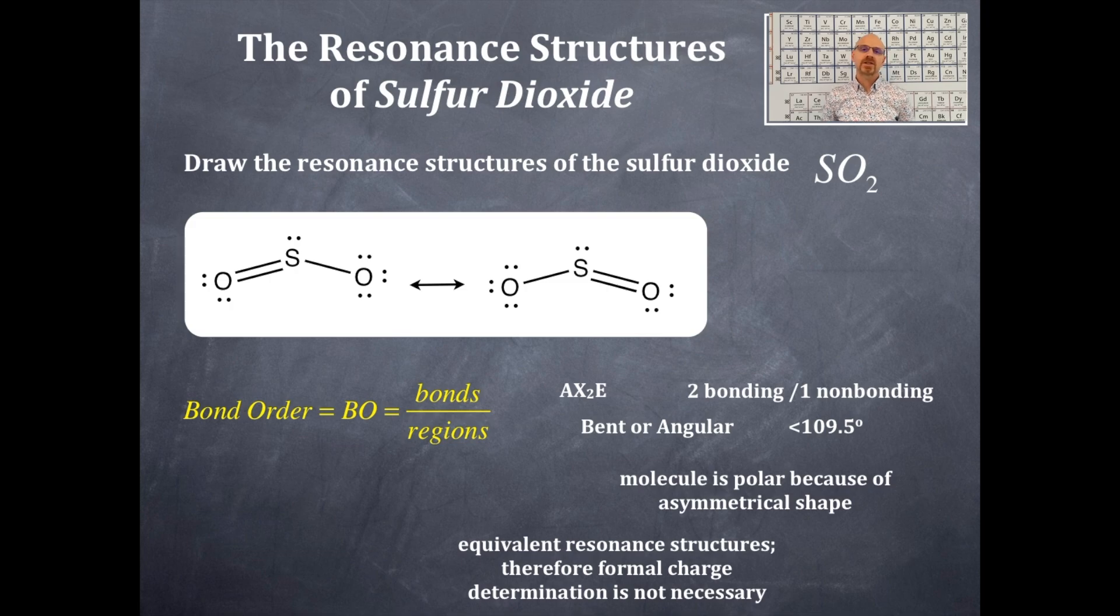How many bonds do you see around the sulfur, the central element? I see a single bond and a double bond, but that double bond is composed of two types of bonds, a sigma and a pi. So let's count up the total number of bonds around each sulfur.